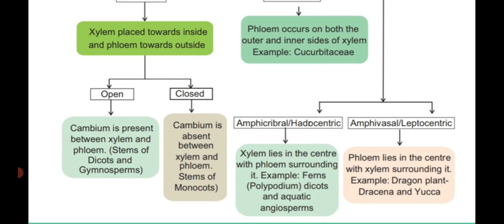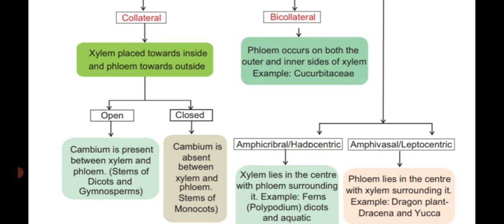The collateral vascular bundle is again divided into two types based on the presence or absence of cambium: open type and closed type. In the open type, cambium is present between the xylem and phloem components — called open collateral vascular bundle. Example: stem of dicots and gymnosperms. In the closed type, cambium is absent between xylem and phloem. Example: stem of monocots.